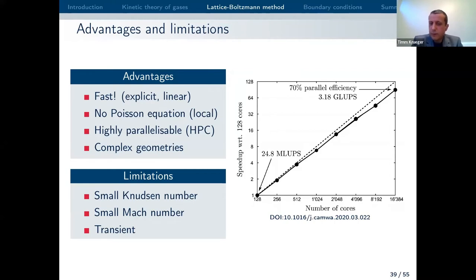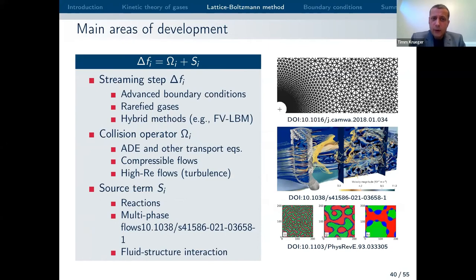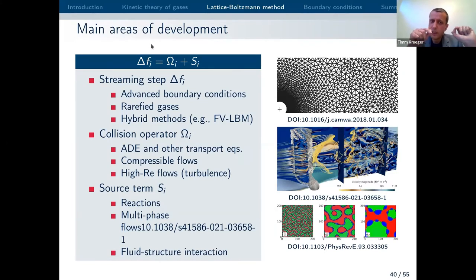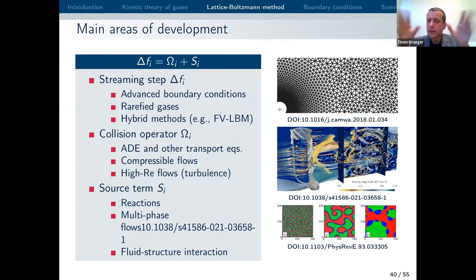Lattice Boltzmann can be parallelized quite easily because it's more or less local, and it can be applied to complex geometries. Some main areas of development — just to show this is not a completed method: if you look at the equation, Δs would be the streaming step, Ω is the collision operator, and s is a source term I haven't talked about yet. You can improve the lattice Boltzmann algorithm by looking at all three of these things. For example, if you improve the streaming, you can implement advanced boundary conditions based on the bounce-back method. You can also get back to rarefied gases if you revise how the populations are streamed.